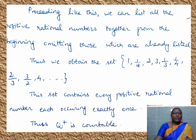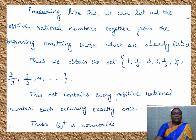Proceeding like this, we can list all the positive rational numbers, omitting those which are already listed — that is, we collect each value exactly once. So we get the sequence: 1, 1/2, 2 (i.e., 2/1), 1/3, then 3/1, 1/4, and so on — noting that 2/2 equals 1 which is already taken, and 2/4 equals 1/2 which is also already taken. This set contains every positive rational number, each occurring exactly once. So Q⁺ is countably infinite and hence Q⁺ is countable.